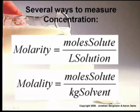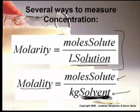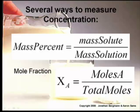We can measure solutions - we can measure their concentrations. Solubility is a measure of the maximum amount, but if you have less than the maximum, we can measure how much is dissolved specifically. We've talked about molarity - moles of solute per liter of solution. A new term today is molality - moles of solute per kilogram of solvent. Then there's mass percent - mass of solute per mass of solution, times 100.